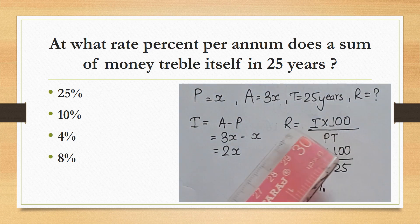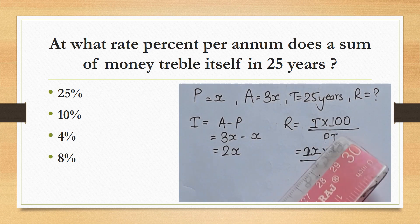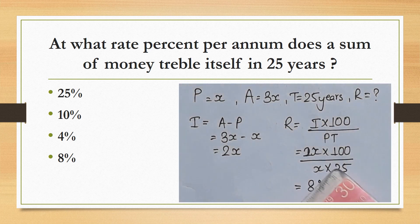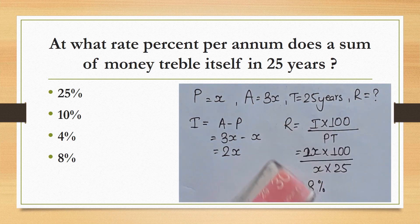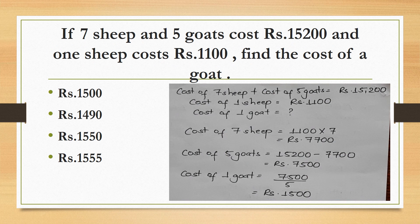At what rate percent per annum does a sum of money triple itself in 25 years? Using the simple interest formula, solving gives 8%.